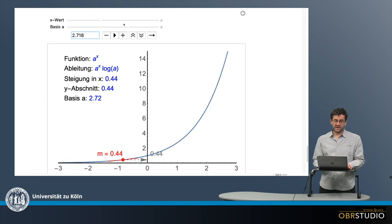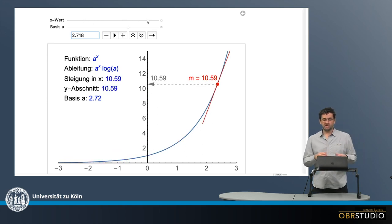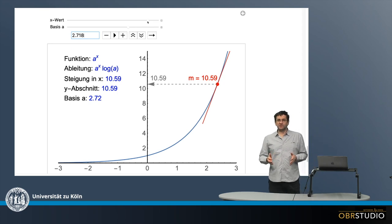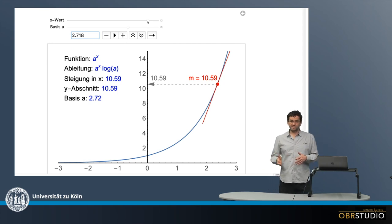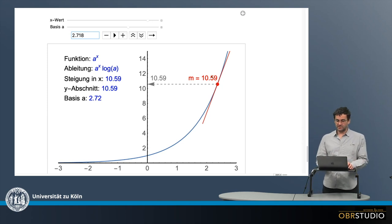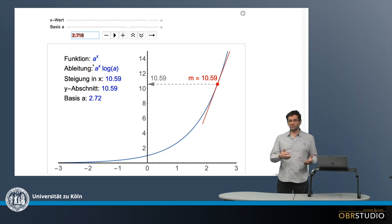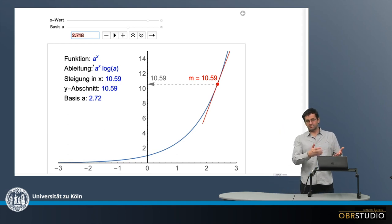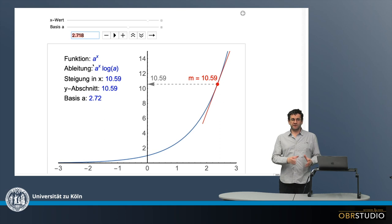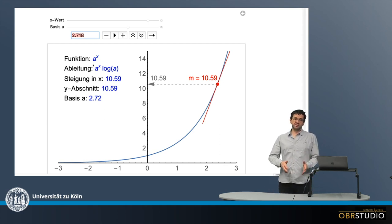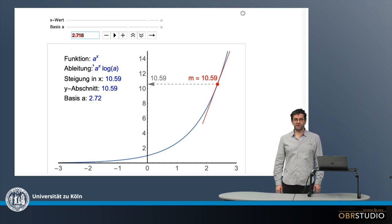Now no matter what x I choose, the y value of the function equals the value of the derivative — the slope at a certain x value. And of course, this number, the basis a of the function, is what we assign to e. This illustrates in a playful way why the derivative of e to x is the same as the function e to x.